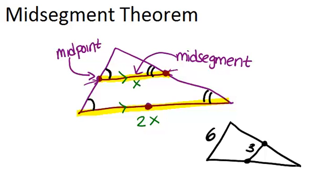So the three things you should remember are, first of all, what a mid-segment is, secondly, that the mid-segment will always be parallel to the third side of the triangle, and third, that the mid-segment is half the length of the third side of the triangle.